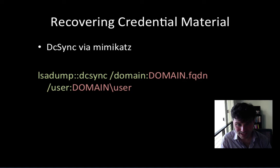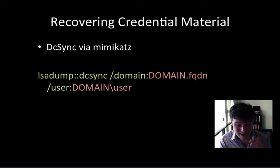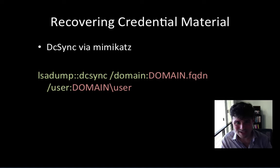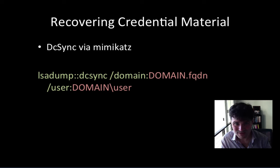Here's another favorite — DCSync. DCSync uses APIs in Windows designed for domain controllers to replicate information between each other. What DCSync lets you do is target a domain controller and pull back hashes for specific users. Red team operators often use DCSync to pull back a krbtgt hash so they can forge a golden ticket later. This is a very nice way to pull credential material from a domain controller without installing malware on the target or doing something dangerous like injecting into LSASS.